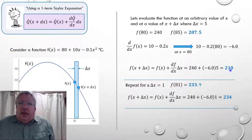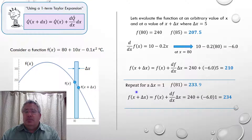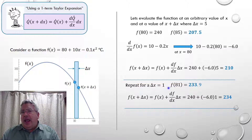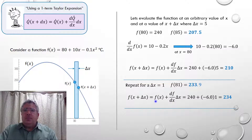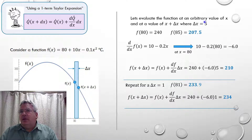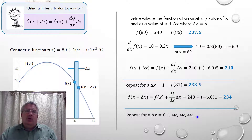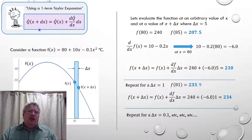We repeat for a smaller Δx = 1. f(81) evaluates to 233.9. The Taylor series approximation gives 240 + (−6)(1) = 234 — very close. As Δx gets smaller (0.1, 0.01, etc.), the approximation gets better and better. Since in our derivation we're using dx, a differential, the one-term Taylor series expansion is valid and allows us to convert the term at x + dx into something workable.